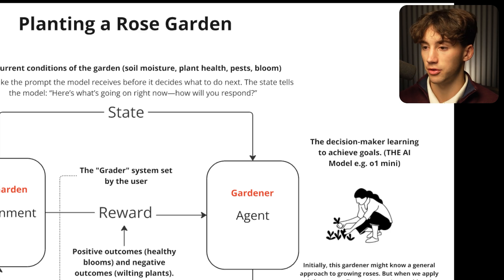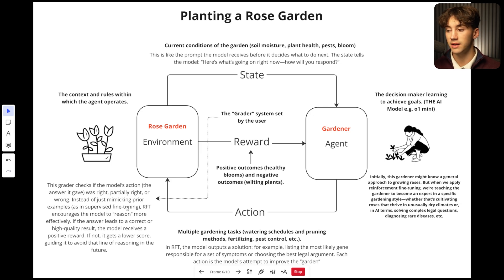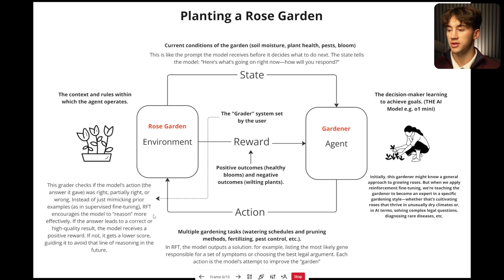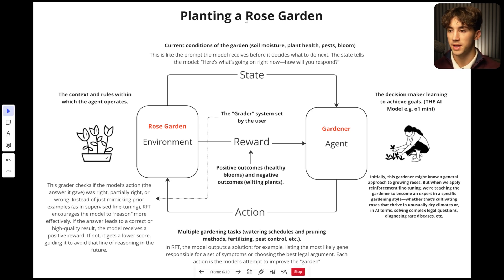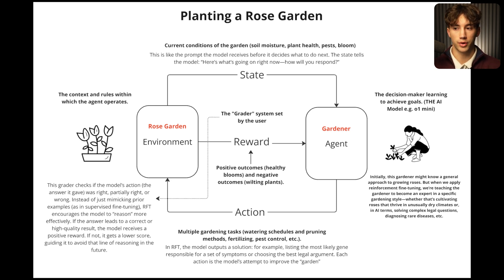The reward system is the grader — the scoring function set by the user. The reward tells the agent whether it achieved a positive outcome based on the action it took, or a negative outcome. A positive outcome is healthy rose blooms; a negative outcome is wilting plants. The grader checks if the model's answer was right, partially right, or wrong. Instead of just mimicking prior examples as in supervised fine-tuning, RFT encourages the model to reason more effectively. If the answer leads to a correct result, the model receives a positive reward; if not, it gets a lower score, guiding it to avoid that line of reasoning in the future.